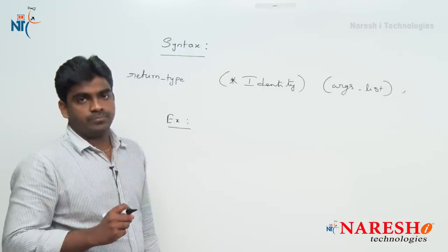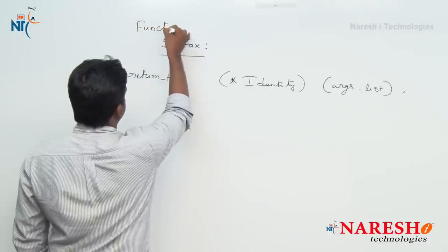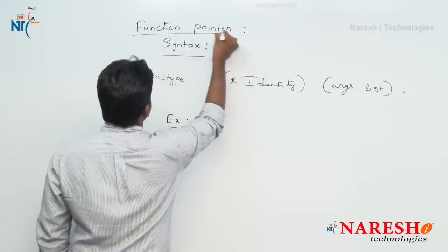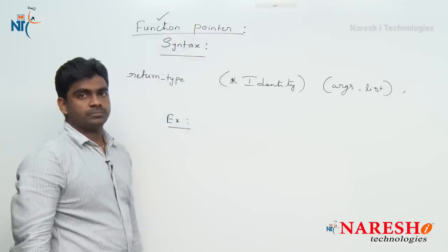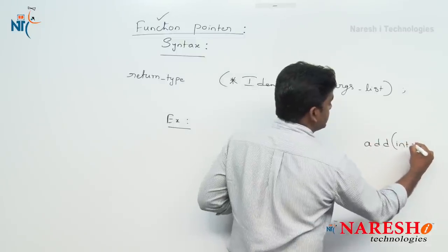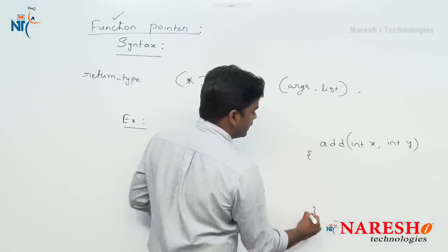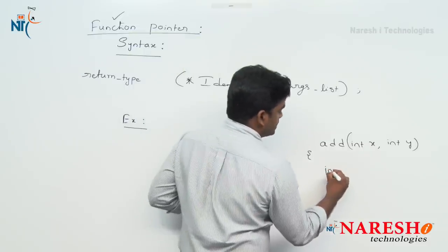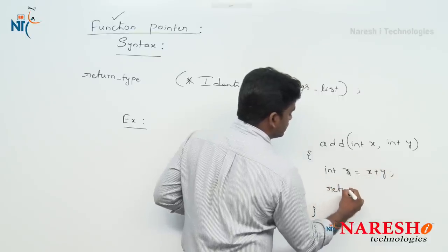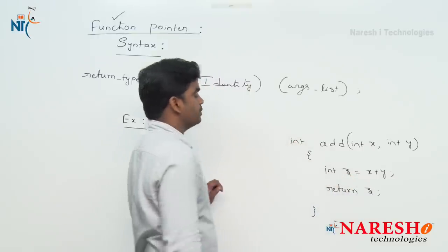See one example. Take any function. Suppose the function is 'add', taking two integer arguments — int x and int y. It performs the addition operation and returns the value z, which is of integer type. Function is ready.